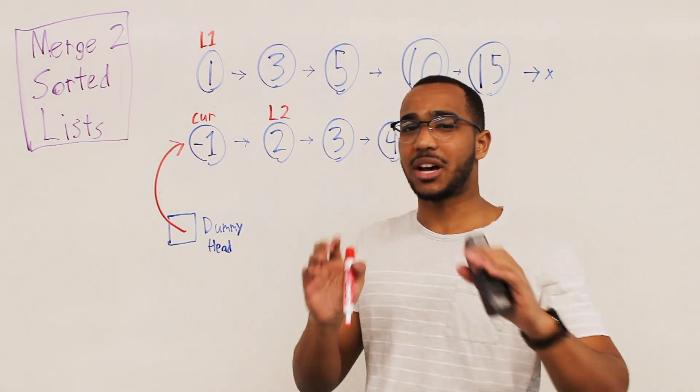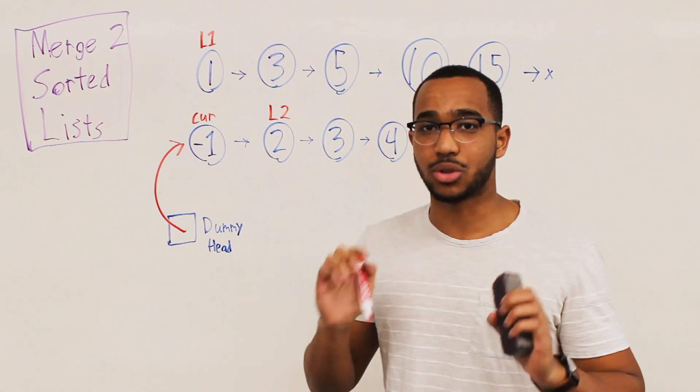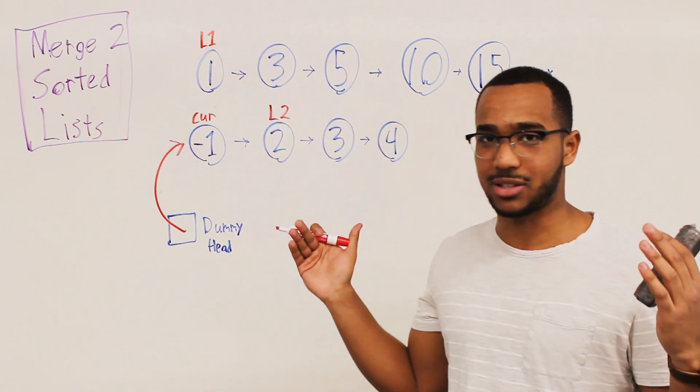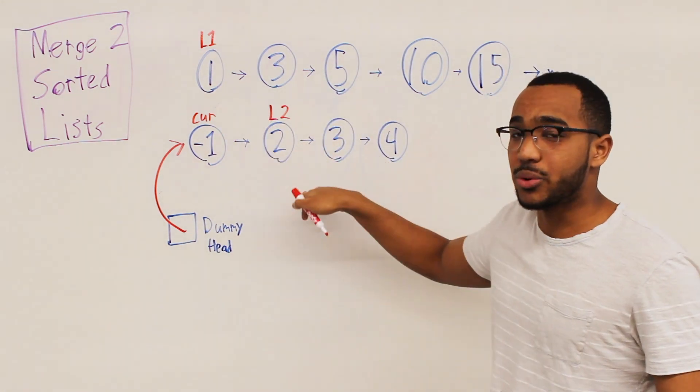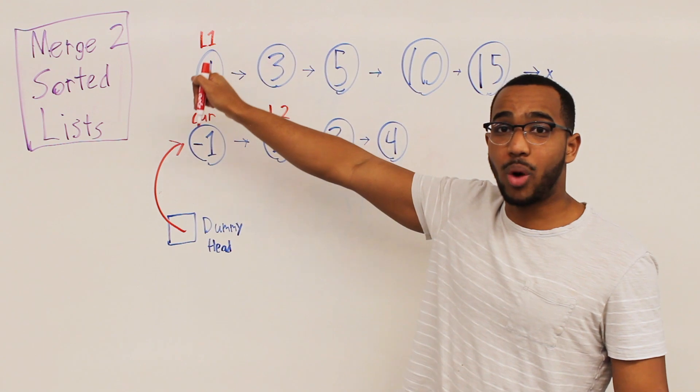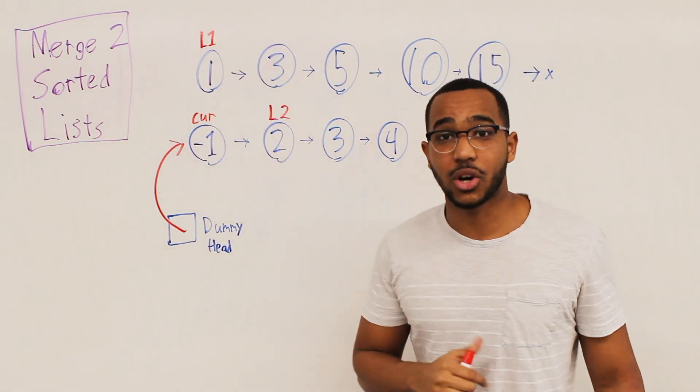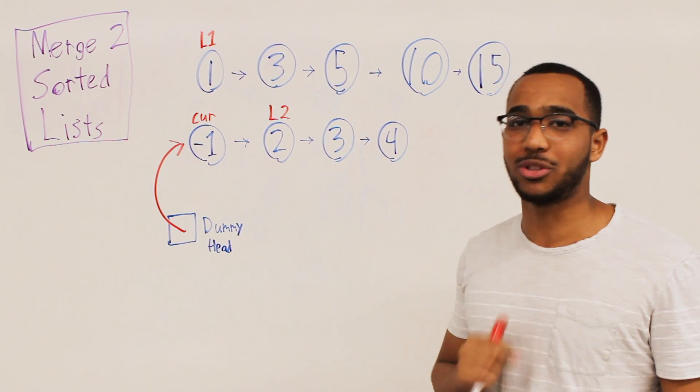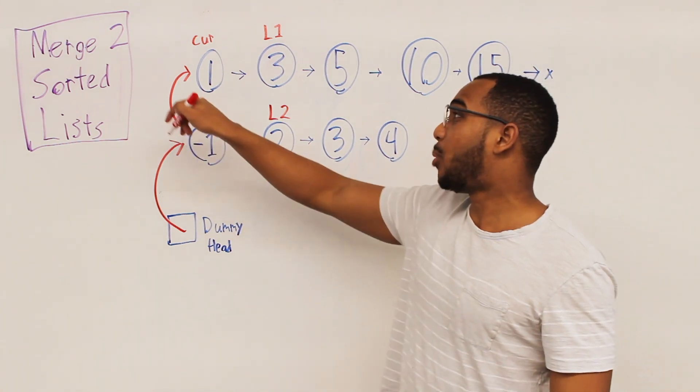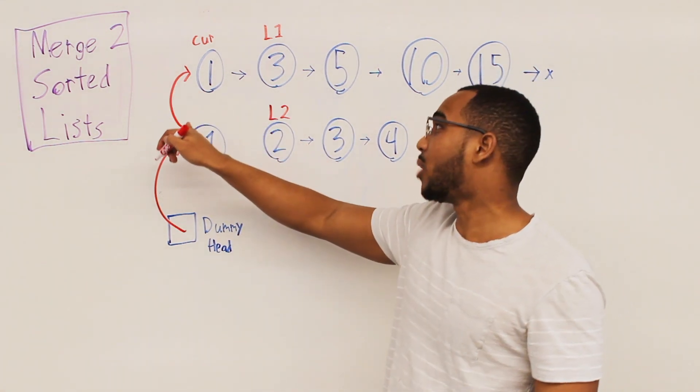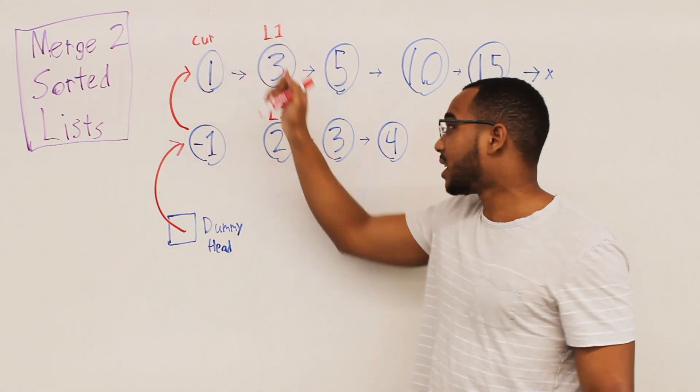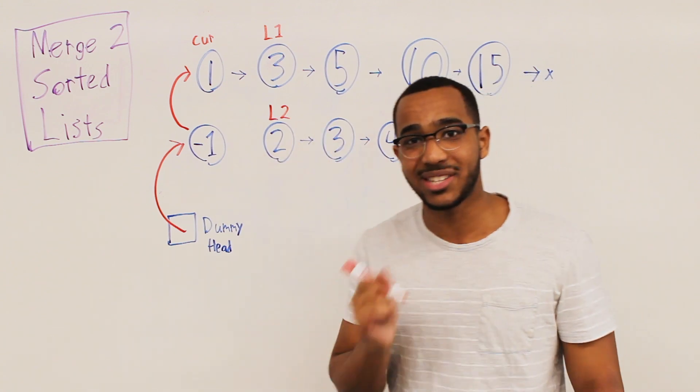The thing about these linked list problems is they're often done in m plus n time or linear time and we use constant space because it's just about rewiring. It's literally like we're electricians. We're just rewiring stuff. So what we do is one versus two. One gets the placement because it is less. So cur.next we point it to list one and we advance list one. And of course we advance cur to the tail of the sorted list. Cur always points to the tail of the sorted list. And so as you can see we rewired the node cur was sitting at to now point to this node. And now cur hops itself to what it just pointed itself to. Because cur needs to stay at the end of the sorted list. So list one is sitting here. List two is sitting here. Those are pointers. They're pointing into the lists.